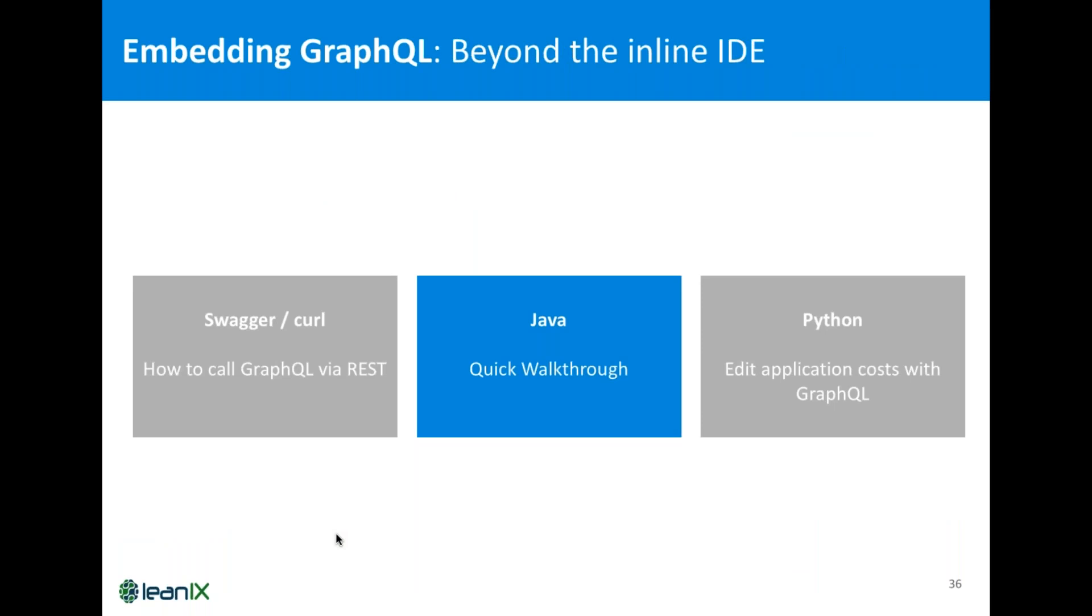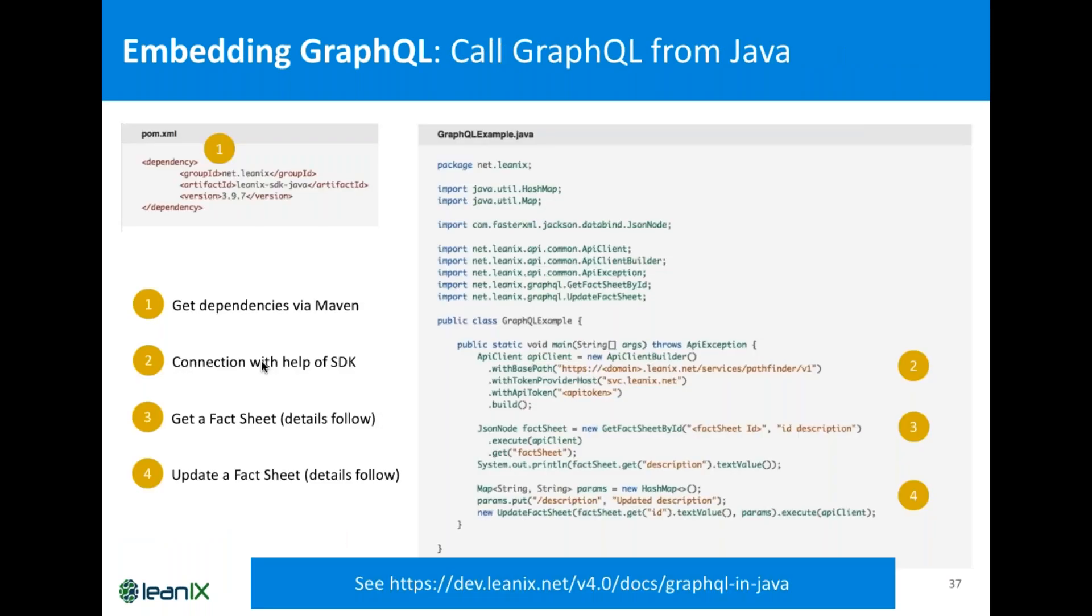Essentially, what we learn is that typically you don't want to call GraphQL from REST or from curl, which you typically do with APIs like a normal REST API. But for GraphQL, it's so easy to create Java or a Python program. Let's just jump into this one. So, Java. What's nice about Java is that we have an SDK available. So, we use Maven and we give you an SDK on LeanIX. What this SDK will do for you is it will handle the connection. So, it will handle the authentication. Essentially, it's just about typing those five lines to create an API client with the right base path. So, please make sure to have your right domain here, token provider host, and with the API token, and then it's just it. We created an object which is getFactSheetById, gives the fact sheet ID and the result, and you can execute it. And similar, you can update fact sheet by a simple call.